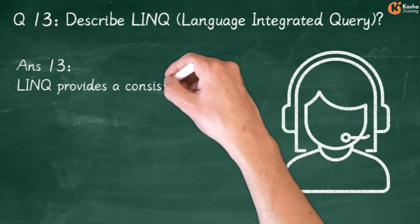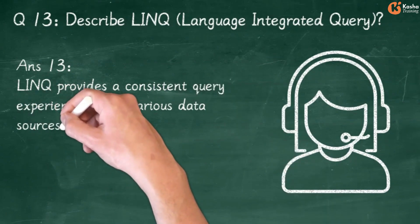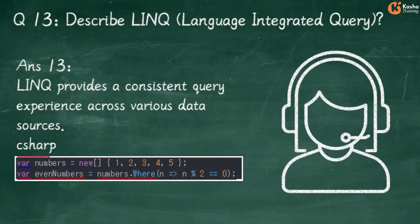Answer 13: LINQ provides a consistent query experience across various data sources. In C#: Var Numbers = New {1, 2, 3, 4, 5}. Var EvenNumbers = Numbers.Where(n => n % 2 == 0).